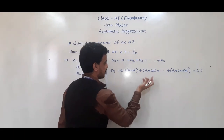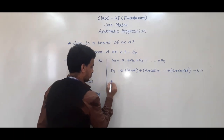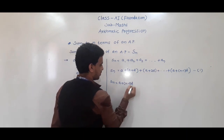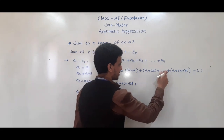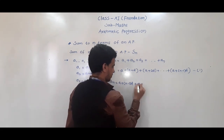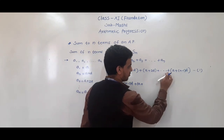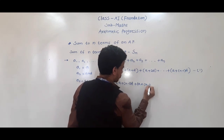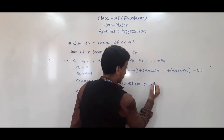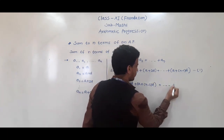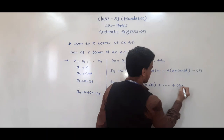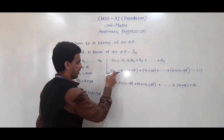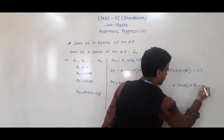Now we have to write this in reverse order. So Sn = [a + (n−1)d] + [a + (n−2)d] + ... + (a + d) + a. This is equation 2.